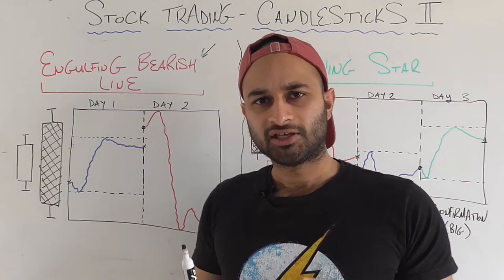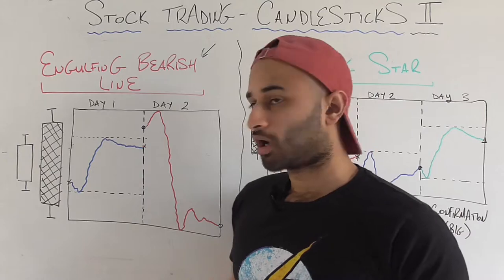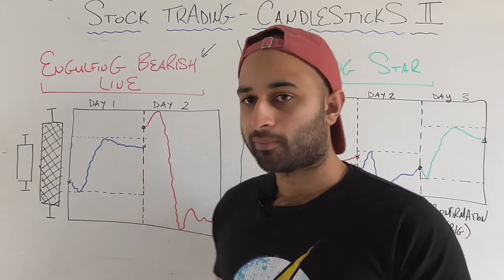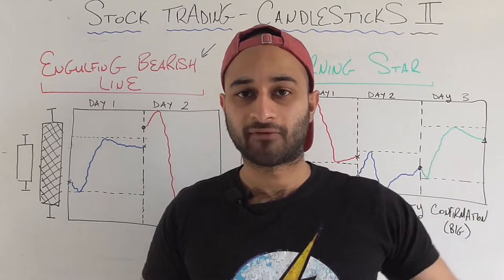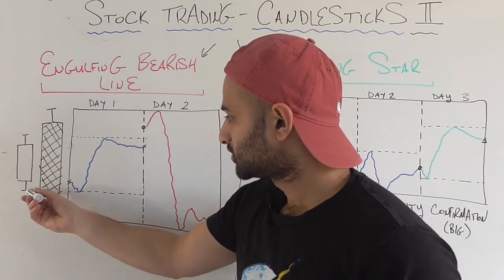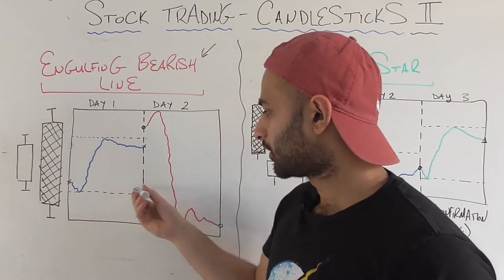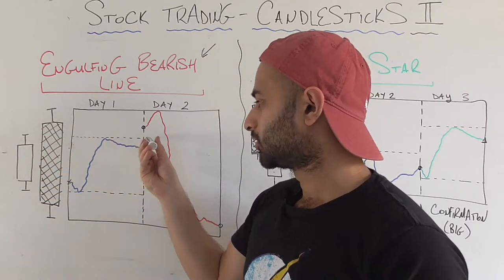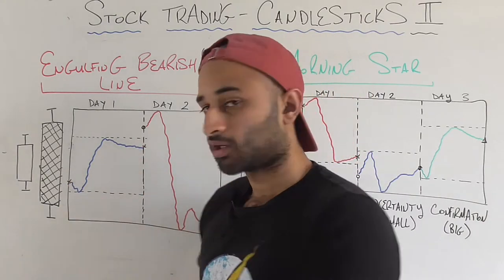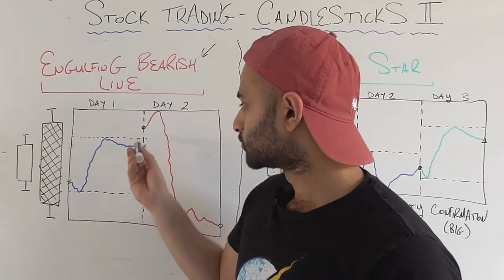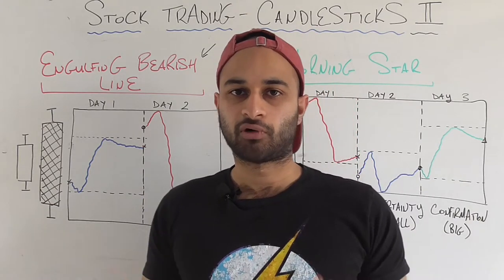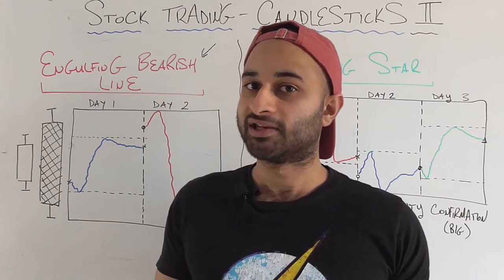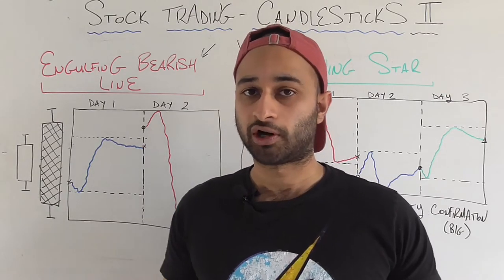A quick note on drawing these: I first draw dotted lines for the maximum and minimum so I know where the graph should stop and start. Then I put markers like an X for the opening and closing prices. Based on those four reference points I can draw an idea of what the stock might be doing — again, just an idea, because candlestick patterns don't give us the full story.